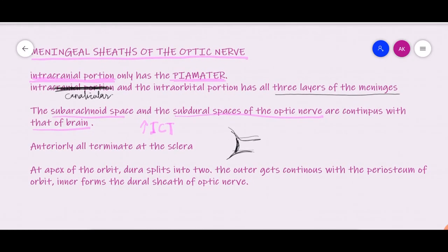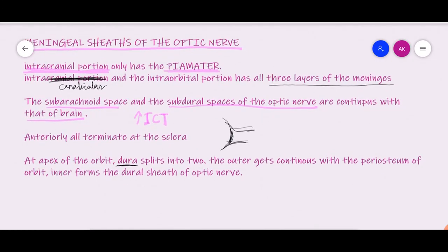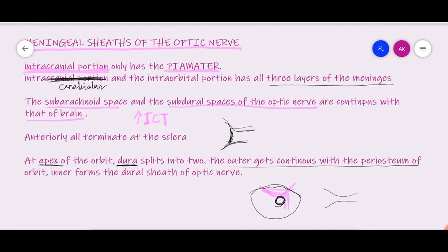One more important point is the splitting of the dura at the apex of the orbit — the point where the optic canal ends. At that point, the dura mater splits into two layers. The outer layer becomes continuous with the periosteum of the orbit and fuses with the bone. It is the inner layer which forms the sheath of the optic nerve.